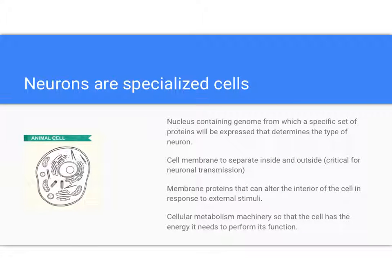Let's start with a generalized animal cell. Neurons are just a specialized form of this. They have a nucleus containing a lot of the genetic information required to make all the proteins of the cell. They are surrounded by cell membrane, which is critical for separating inside from outside compartments — and as we'll see in another tutorial, that's really important for transmitting electrical signals. Mitochondria also play a critical role, since so many neuronal functions require a lot of energy.